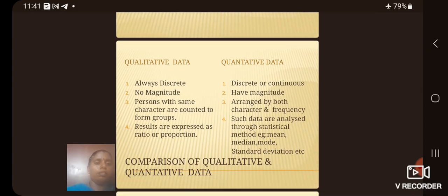This is the difference between qualitative data and quantitative data. In qualitative data, always discrete. Quantitative: discrete or continuous. It has no magnitude. It has magnitude.